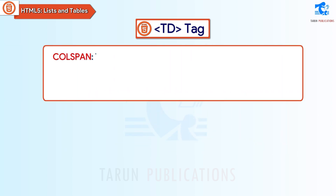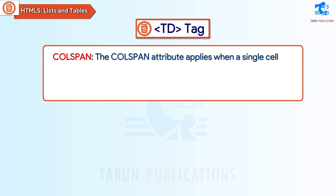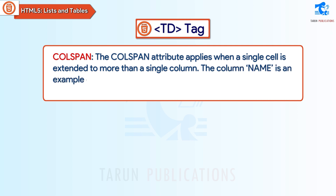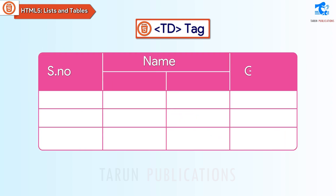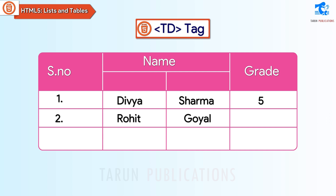Col Span — the colspan attribute applies when a single cell is extended to more than a single column. The column name is an example of colspan in the given table. For example: Serial Number, Name, and Grade. Serial Number 1: Divya Sharma, Grade 5; Serial Number 2: Rohit Goyal, Grade 6; Serial Number 3: Mahesh Gautam, Grade 6.